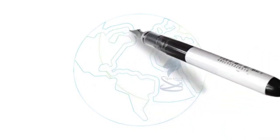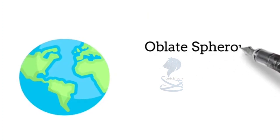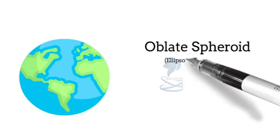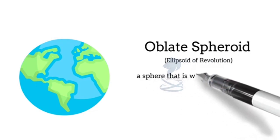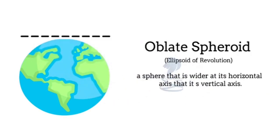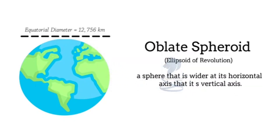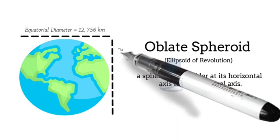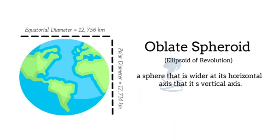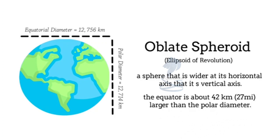As we all know, earth is assumed to be spherical in shape, but in reality earth is an oblate spheroid. An oblate spheroid means a sphere that is wider at its horizontal axis than its vertical axis. The horizontal axis is the equatorial diameter and the vertical axis is the polar diameter. Equatorial diameter is 12,756 km and polar diameter is 12,714 km — about 42 km larger at the equator — proving earth is an oblate spheroid.